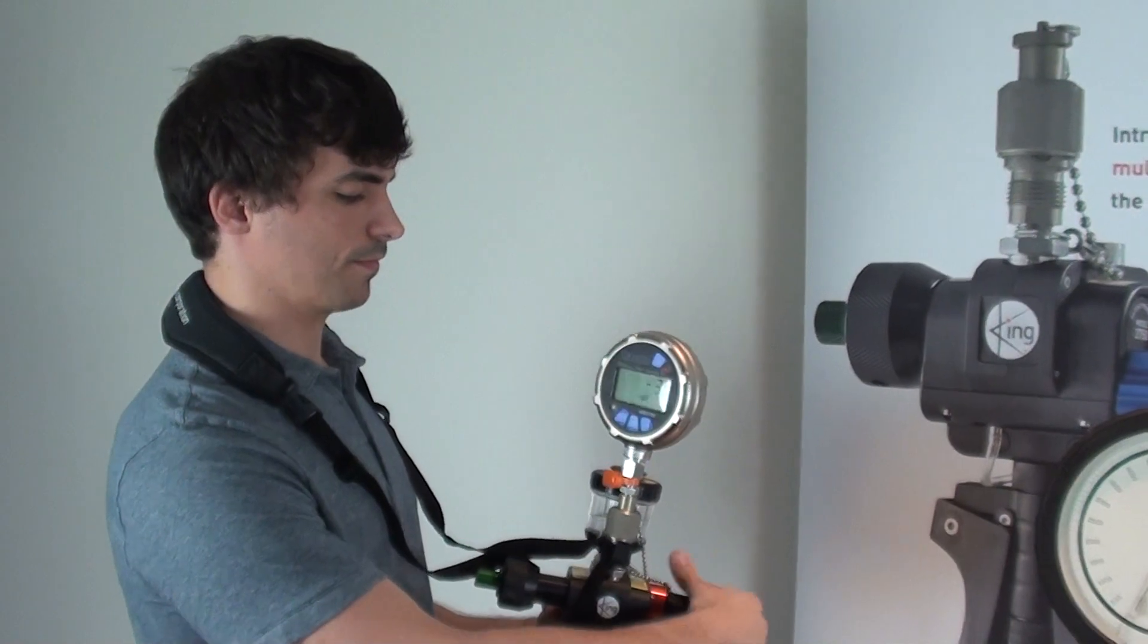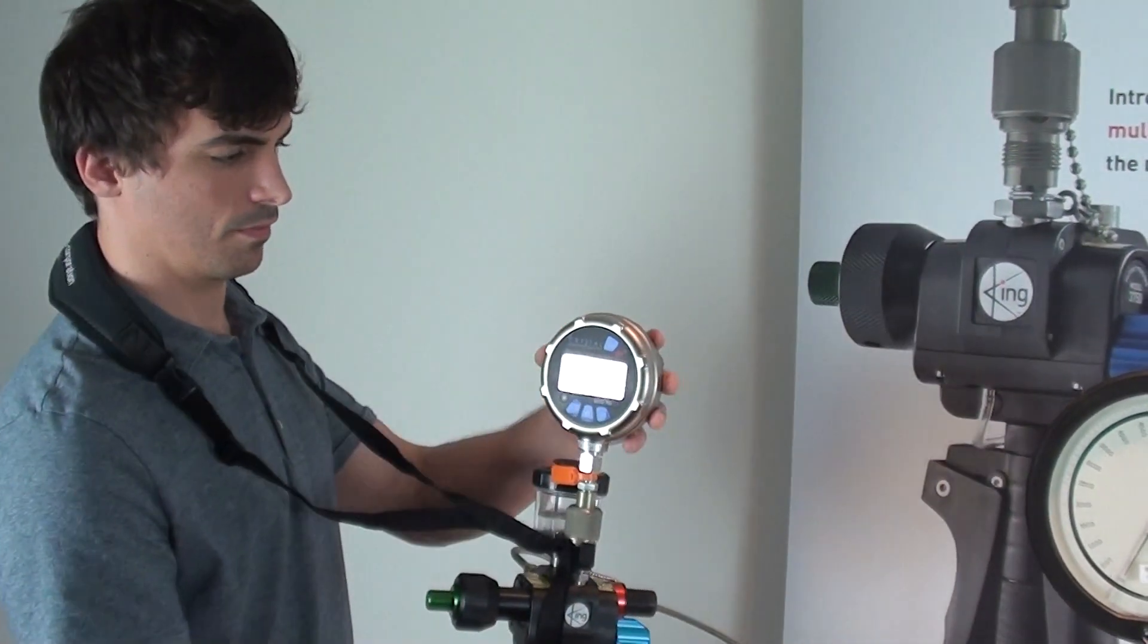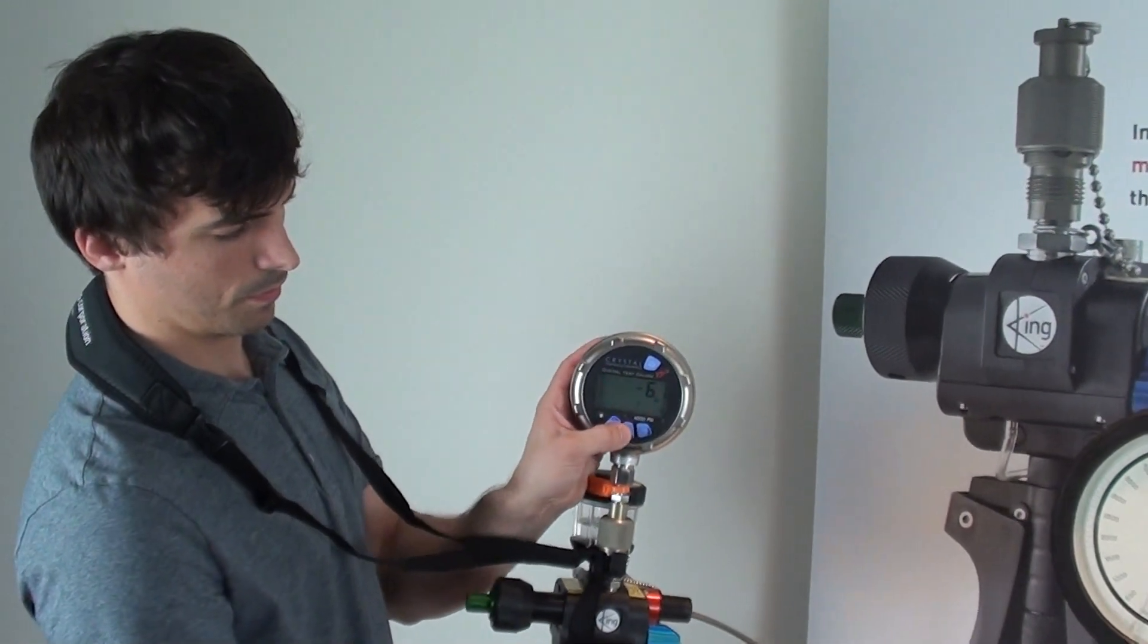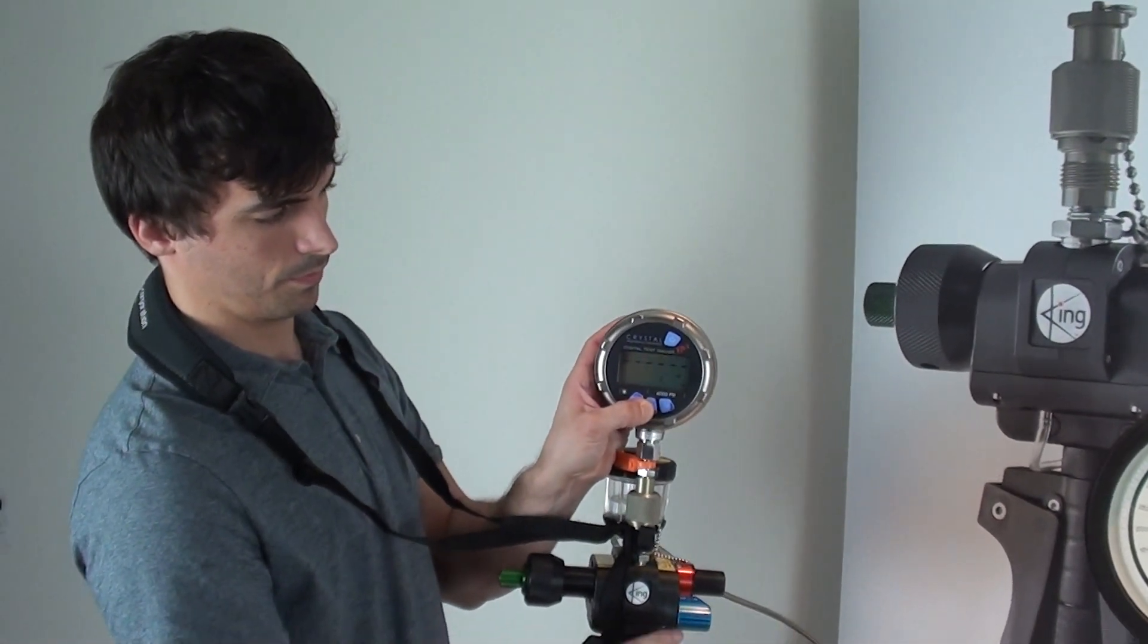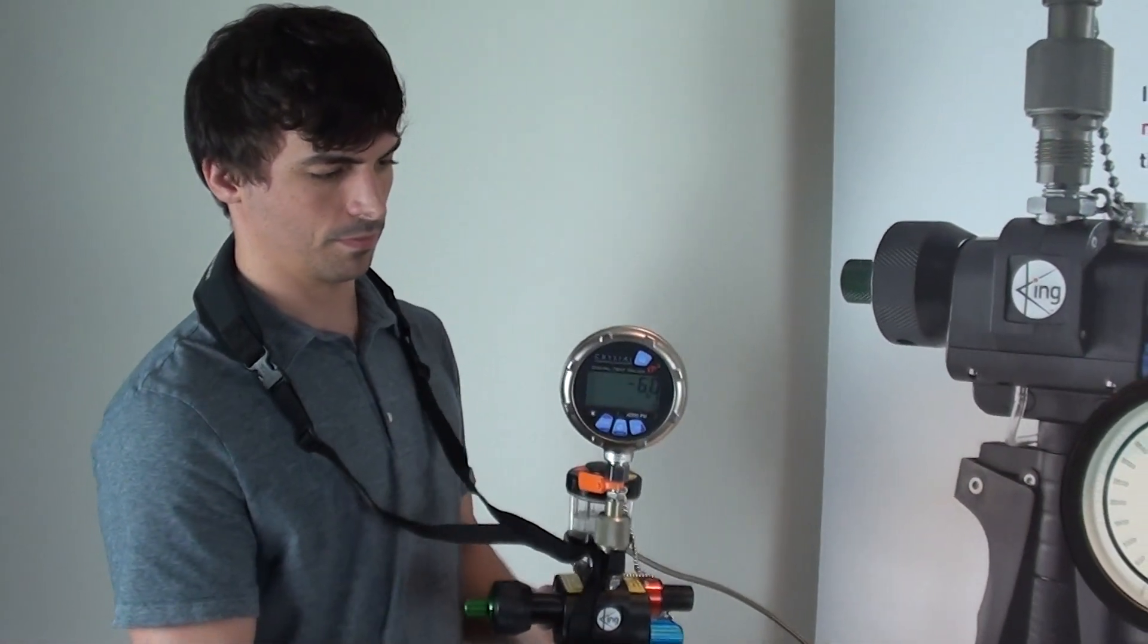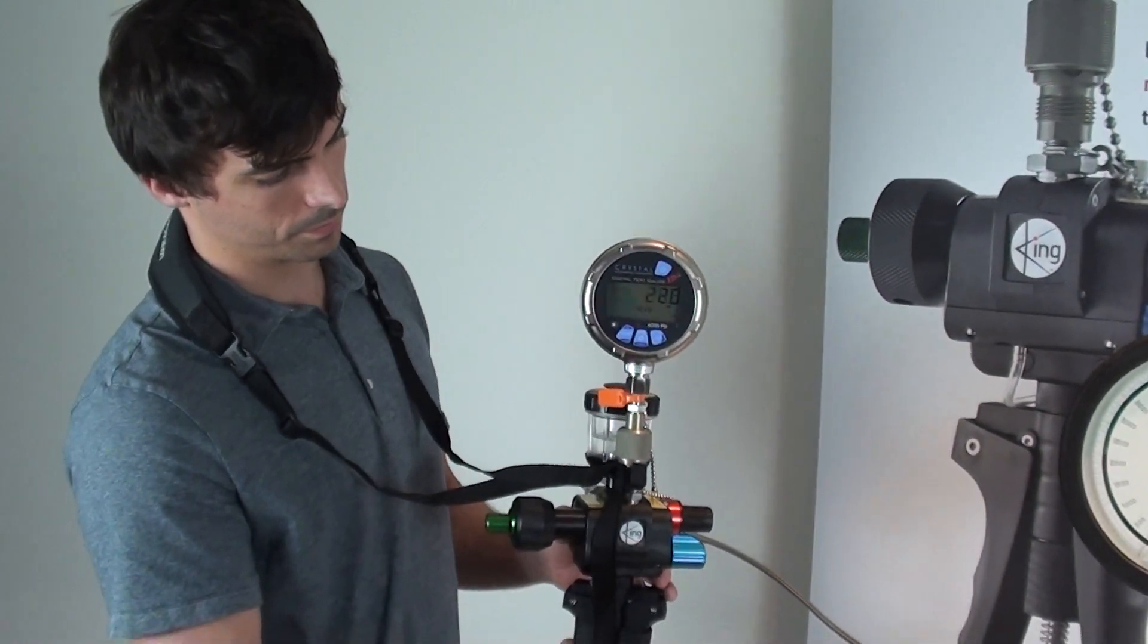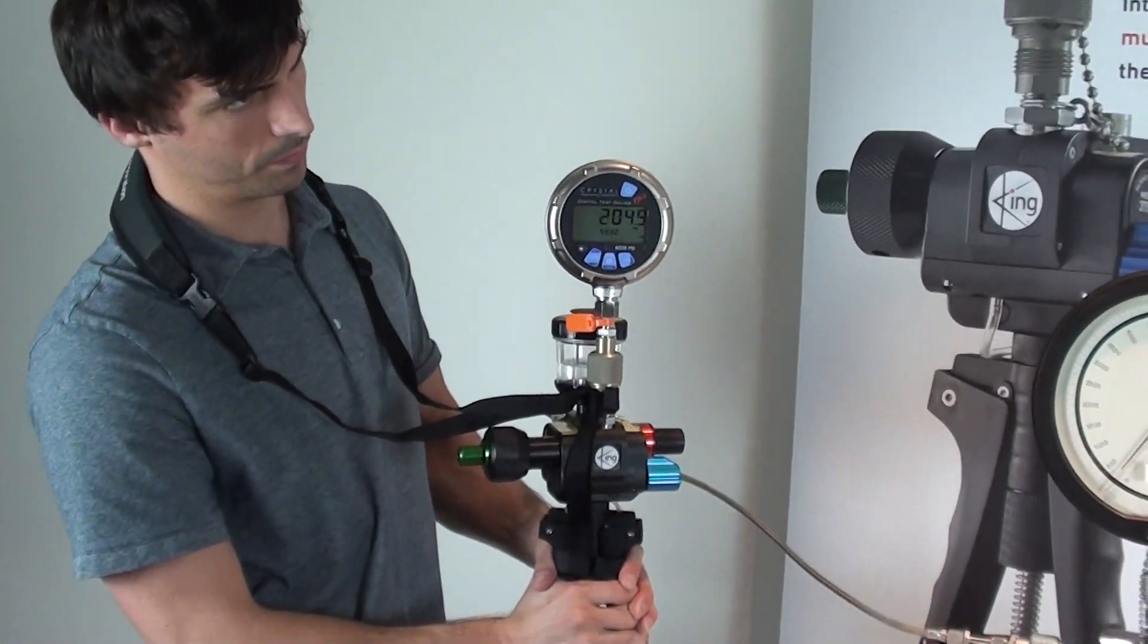So Taylor's going to cycle through the vacuum and venting a couple of times just to make sure the system has enough water and as much air as possible has been removed. Then we're going to switch over to the pressure mode and once again use the hand pump to generate the high pressure.